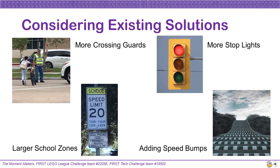Our solution involves trying to change the behavior of both groups. As a part of our solution development, we needed to consider existing solutions to make sure that our solution would be innovative and solve the problem better than the existing solutions. We considered employing more crossing guards, but there are too many intersections to cover throughout our community. Also, crossing guards can only help during arrival and dismissal times. We thought about expanding school zones, but the neighborhood is too large to cover it all, and again, it would only be active during arrival and dismissal times. We could add stoplights at intersections, but they are unnecessary for the amount of traffic and would require big infrastructure changes. We could also add speed bumps, but these would cause excessive wear and tear on vehicles if widely installed, and also slow down emergency vehicles. The biggest problem with these proposed existing solutions is that they only apply to drivers and not pedestrians and bicyclists.